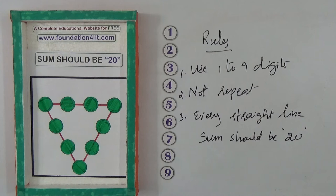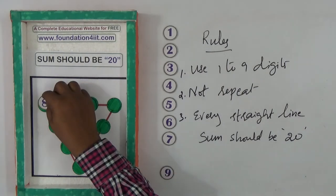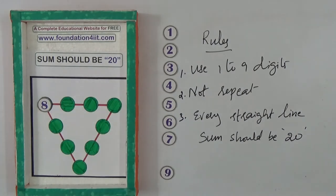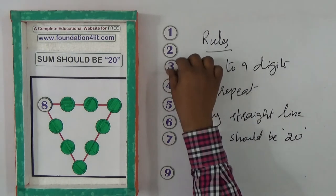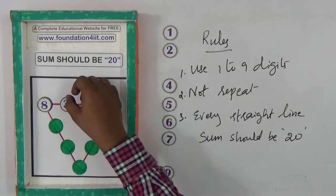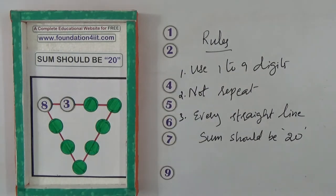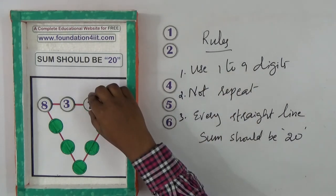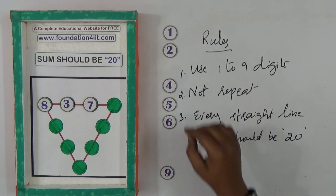I'm placing the numbers now. Observe—I'm taking eight and placing it here. There are many ways; I'll explain one. Next, three, because eight plus three is eleven, plus seven equals eighteen, so I need two.